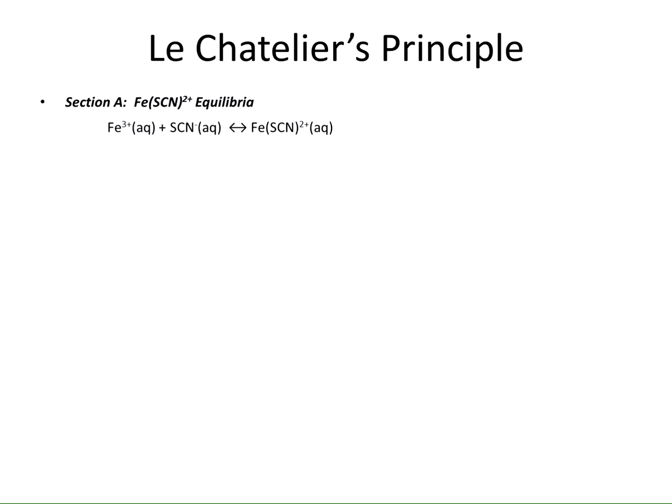This lab will also set us up to understand the principles and preview some of the equilibrium systems we'll be studying in further labs — in particular, the QUAL scheme, which your lab practical is based on. After finishing Section A with the iron thiocyanate equilibrium, we'll be adding different reagents to see how it shifts the equilibrium, and we'll also be adjusting the temperature — cooling it off and heating it up — to see how that affects the equilibrium position.